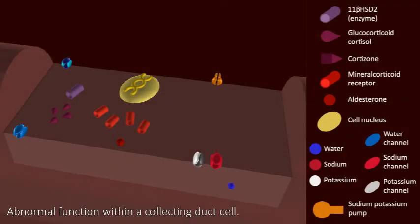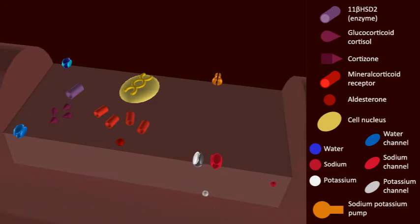Here we see a cross-section of an abnormal functioning cell within the collecting duct. In the clinical condition, the syndrome of apparent mineralocorticoid excess, the enzyme 11-beta-HSD2, shown in purple, does not function properly.